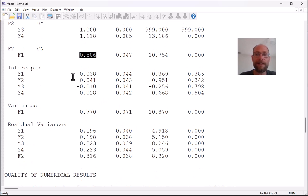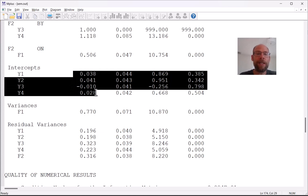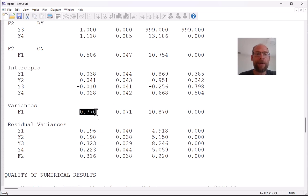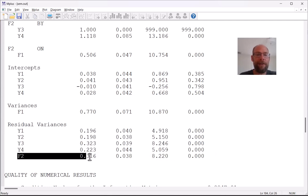Mplus also gives us the intercepts or additive constants for the observed variables for the measurement model. These are typically not of the greatest interest in most analyses unless you have a multi-group analysis or unless you have a longitudinal analysis where you might want to compare the intercepts across groups or across time. Then usually otherwise they are not so interesting to look at. We also get the estimated factor correlation for the exogenous factor f1 and we get the residual variances for the observed variables as well as for our endogenous factor f2.